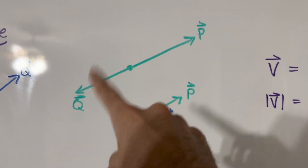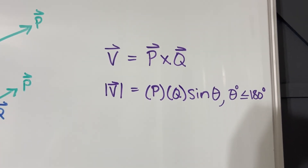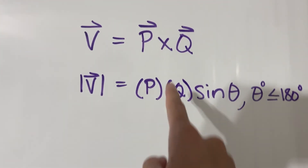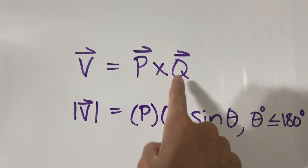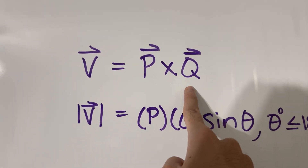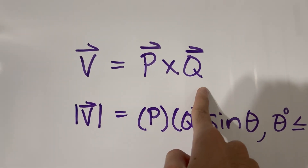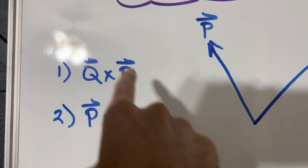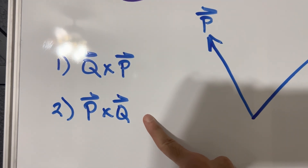I'm also going to talk about a couple of different special cases, and we'll do a quick review of what we covered in the last video. In vector statics, when we take the cross product of vectors P cross Q, the order of these two vectors matters. P cross Q is not the same as Q cross P — the ordering of how you write these vectors does matter.